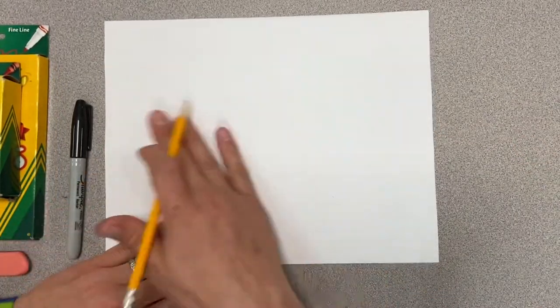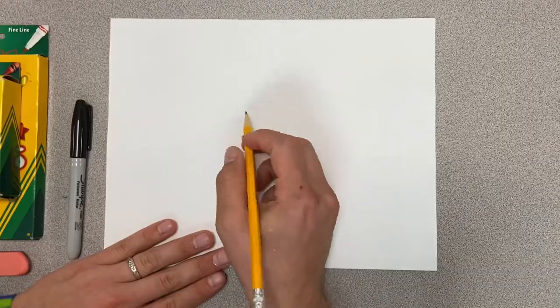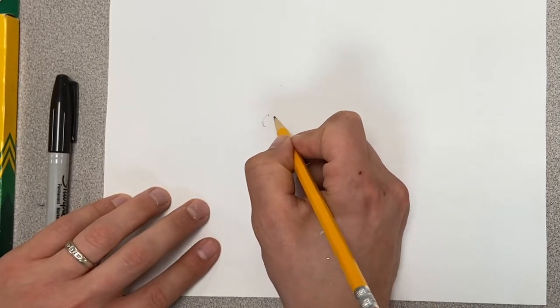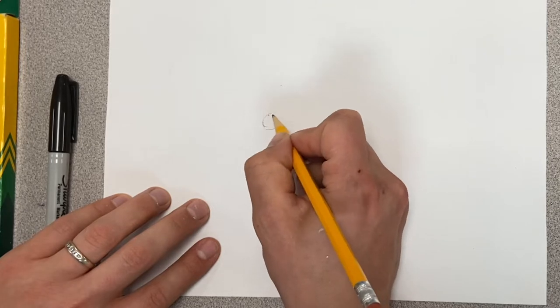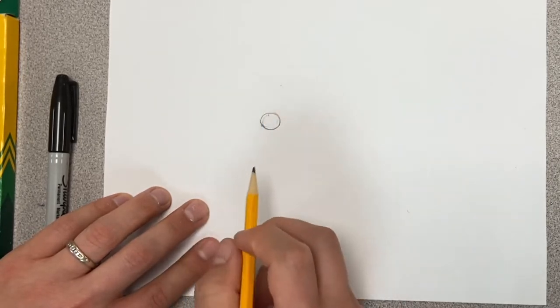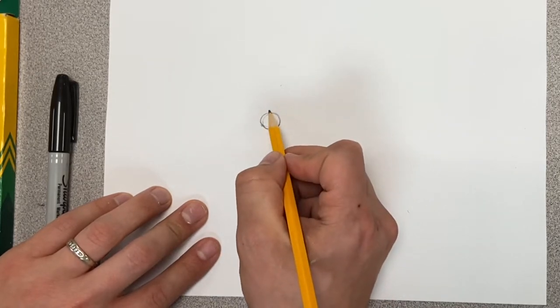So I'm going to start with a really small one in the middle. For that, I'm going to do my little trick of doing kind of lightly and then gradually going over it a little bit darker.